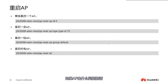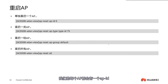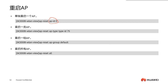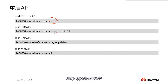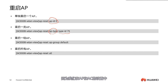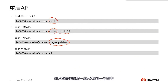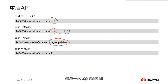This section explains how to restart the AP. If there are issues and we want to restart it, we can use specific commands. For a single AP, use 'AP reset' with the AP ID — for example, 'AP reset AP ID 0' restarts the AP with ID 0. To restart a category, use the keyword 'AP type' with the type ID (e.g., 75). To restart a group — since ACs support AP groups — restarting the group restarts all APs in it. Finally, 'AP all' restarts all APs under this AC indiscriminately.